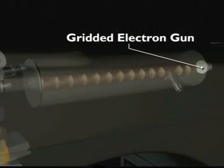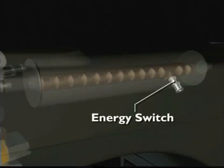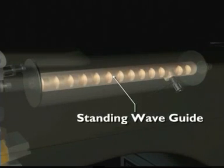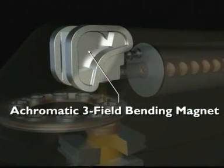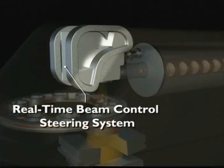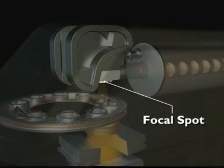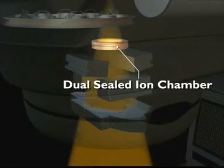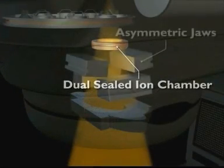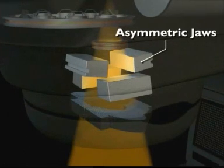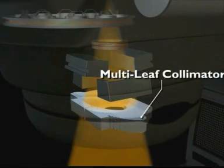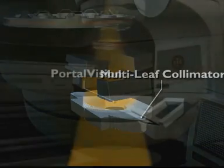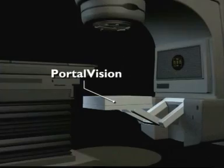Key components of the system are the gridded gun, the patented energy switch, the high efficiency standing wave guide, the achromatic three-field bending magnet, the real-time beam control steering system, the small focal spot, the 10-port carousel, the dual-sealed iron chamber, two sets of independent asymmetric jaws, the dynamic multi-leaf collimator, and the portal vision for IMRT verification.